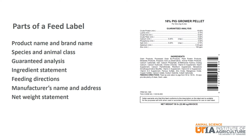All pre-mixed feeds or individual feedstuffs will have a feed label that provides specific information about the given feed. The main parts of a feed label include product name and brand name, species and animal class that the feed is designed for, guaranteed analysis, ingredient statement, feeding directions, manufacturer's name and address, and a net weight statement.